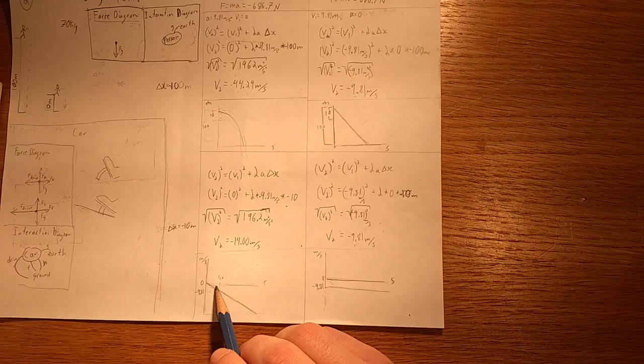So, intuitively, we know that Newton has to be correct here, because after 100 meters, after 1,000 meters, you're going to be falling faster. You're not still going to be falling at 9.81 meters per second.